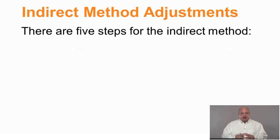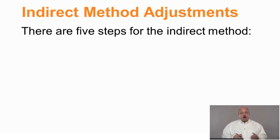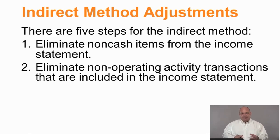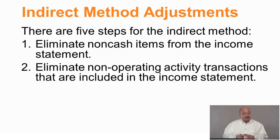There are five steps that we're going to have to go through. We start by eliminating non-cash items from the income statement — those items that didn't have a cash element to them, like depreciation. We then need to eliminate non-operating activity transactions that are included in the income statement, such as the gain on the sale of fixed assets, because that sale is an investing activity.